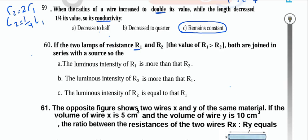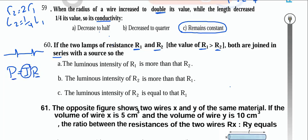Two lamps with resistance R1 > R2 are connected in series. Luminous intensity corresponds to power. P = I²R. In series, current I is constant, so power is directly proportional to R. Since R1 > R2, power 1 > power 2, so luminous intensity of lamp 1 is greater than lamp 2.